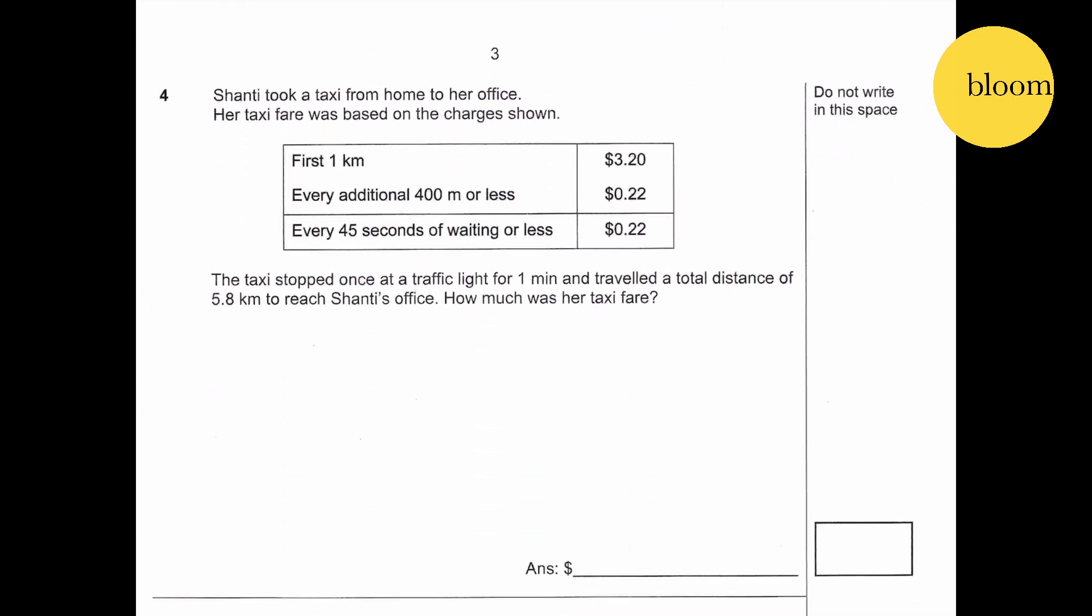Question number 4. Shanti took a taxi from home to her office. Her taxi fare was based on the charges below. First km $3.20, every 400 meter or less $0.22, every 45 seconds of waiting or less is $0.22. The taxi stopped once at the traffic light for 1 minute and traveled a total distance of 5.8 kilometers to reach Shanti's office. How much was her taxi fare?